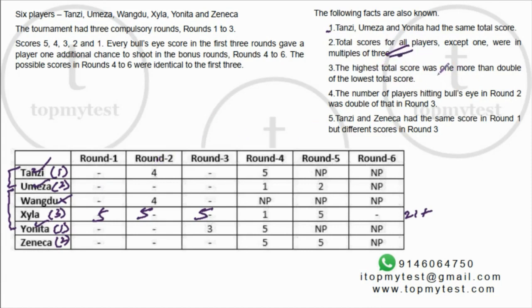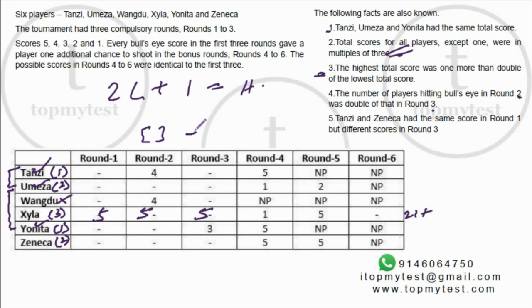Another fact: the highest total score was one more than double the lowest score. Also, the number of players hitting bullseyes in round two is double that of round three. If round three has x bullseyes, round two has 2x. We know Xyla hit a bullseye in all rounds, accounting for one in round three. Adding up: if x=1, round two would need 2, and round one would need 6 — impossible since Vangadu never hit a bullseye.